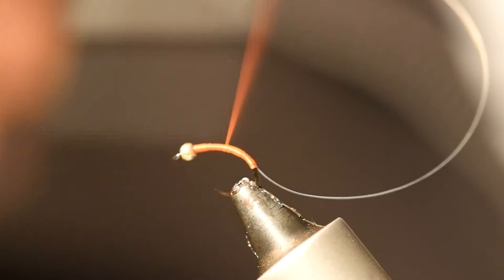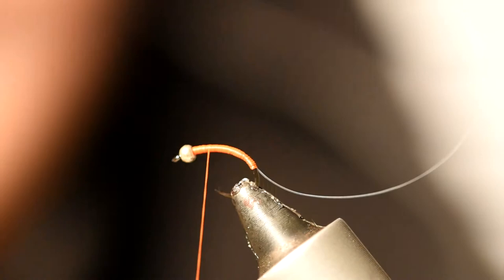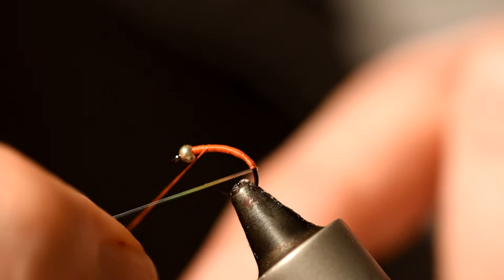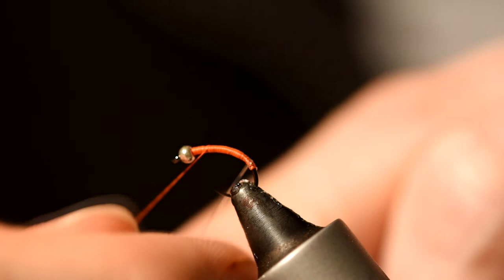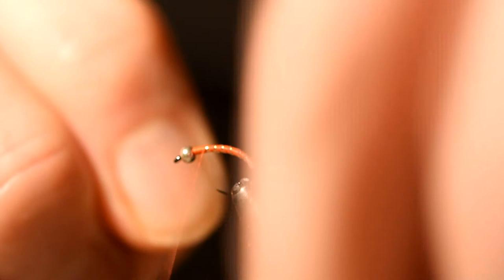Now bring the rib up in open turns - you'll probably get five or six turns on the way up. Bring it up to a couple of millimeters shy of the bead and tie that off. You can get rid of the excess.